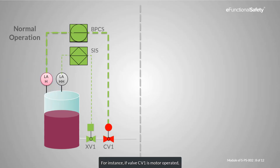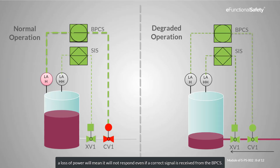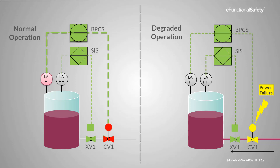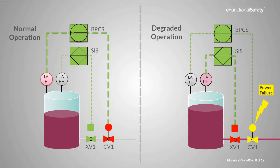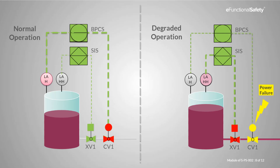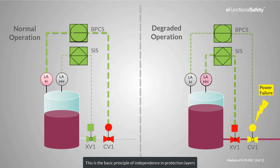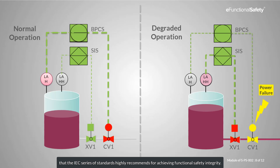For instance, if valve CV1 is motor operated, a loss of power will mean it will not respond even if a correct signal is received from the BPCS. However, the function from sensor LAHH through the SIS logic solver to separate valve XV1 is completely independent, and the spring-actuated valve will stop the flow into the tank even on complete power loss. This is the basic principle of independence in protection layers that the IEC series of standards highly recommends for achieving functional safety integrity.